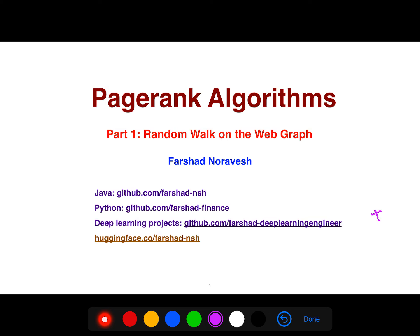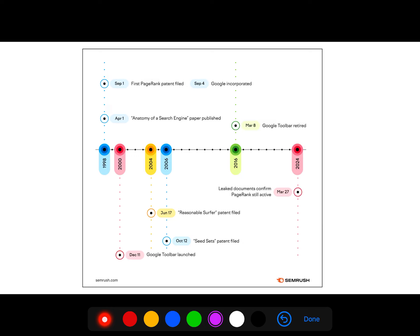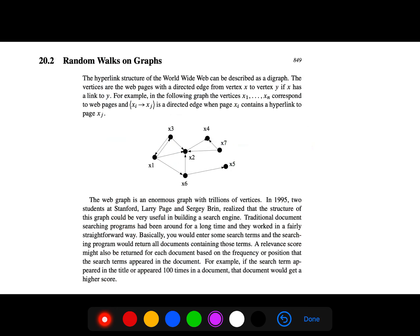You see that in 1998, the first PageRank patent was filed, but then later there are other advances like Google Toolbar was retired, and then something new came. Leaked documents confirmed PageRank is still active. Seed set patterns are also important, and you see the progress that is going on. We still need to understand it even more effectively than before.